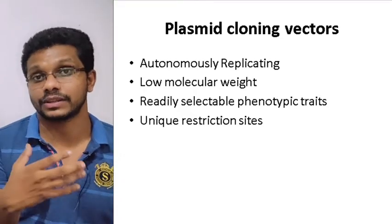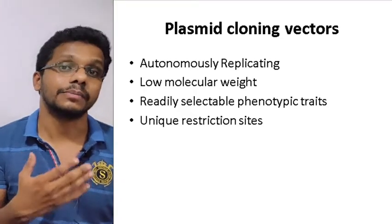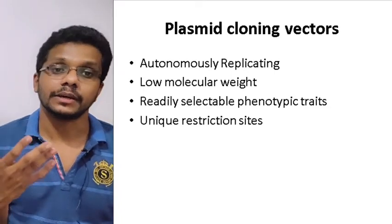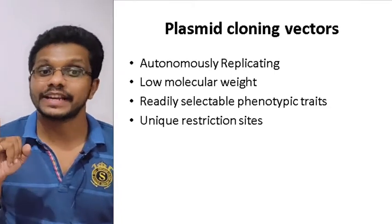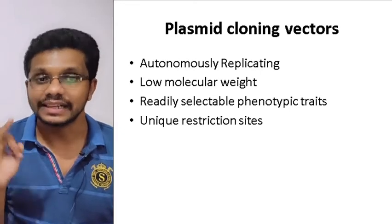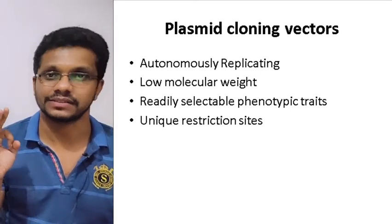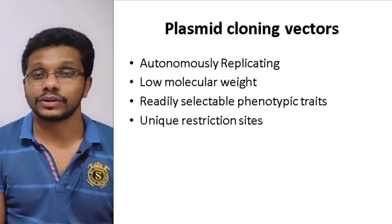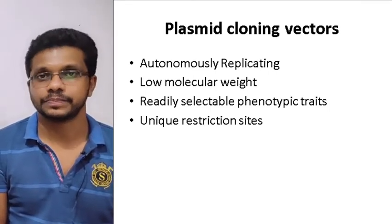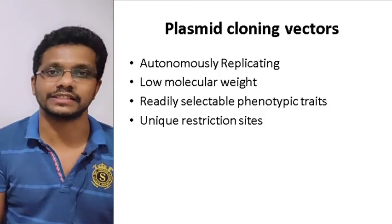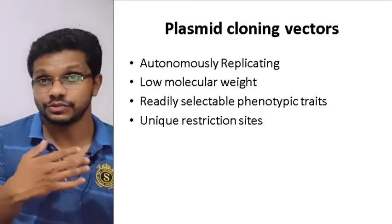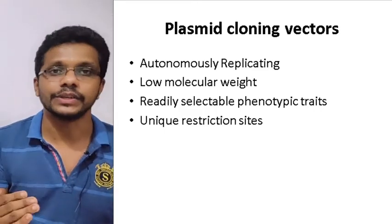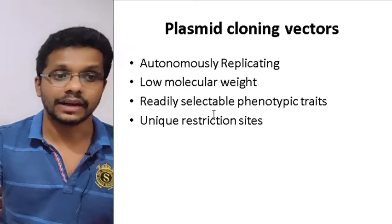These are the parameters or characteristics by which we evaluate the properties of a plasmid cloning vector: autonomous replication, low molecular weight, readily selectable markers, and unique restriction endonuclease recognition sites. One of the classic plasmid cloning vectors is PBR322. It is one of the most widely used vectors and in the initial stages it was very much used for molecular biology experiments as well as for cloning experiments. In this video, I am going to talk about PBR322.